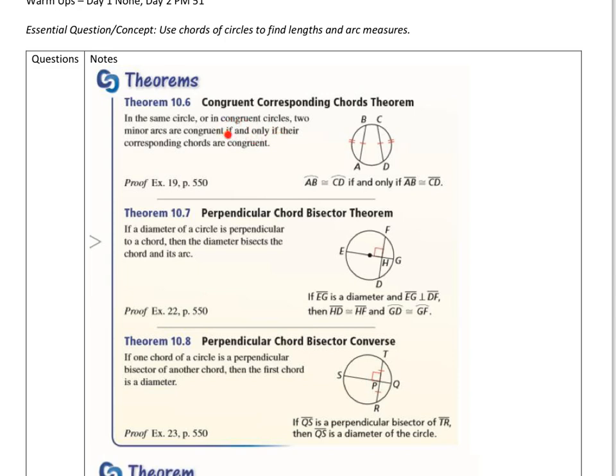Remember, if and only if means it works both ways. So what it's saying here is these two minor arcs are congruent if these chords would be congruent. So if AB and DC are congruent, then arc AB will be congruent to arc DC.